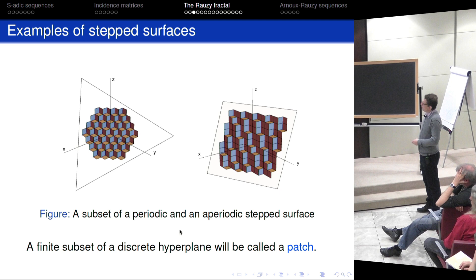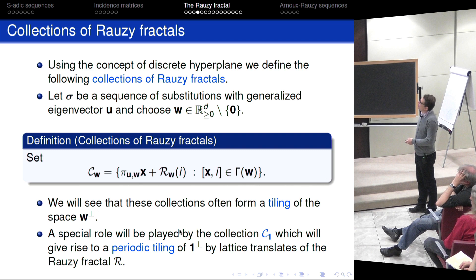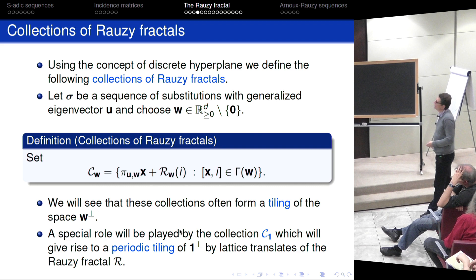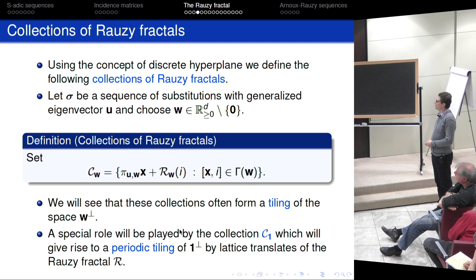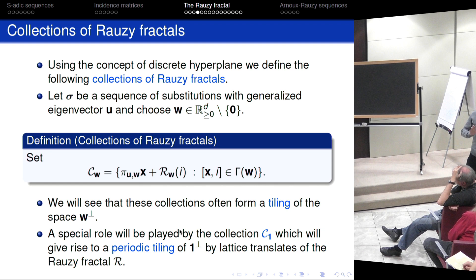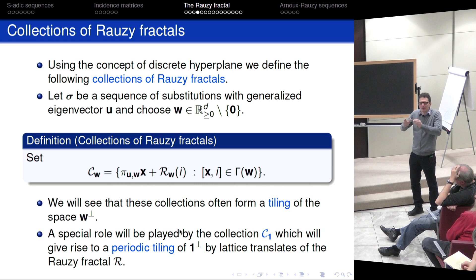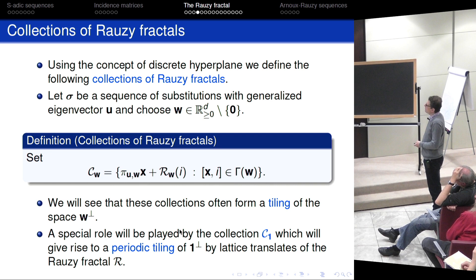This is a patch if you take finitely many of these pieces. There is a collection of Rauzy fractals: we put a subtile at each square of our discrete plane, where I is the type of the square and x is the projection of some lattice point close to the plane. These collections often form tilings. The special role is played by the collection associated with the plane orthogonal to the vector (1,1,...,1), because there we get our periodic tiling, and in this plane we have our Rauzy fractal — which, in the good case, is a fundamental domain of a torus where we see the rotation.